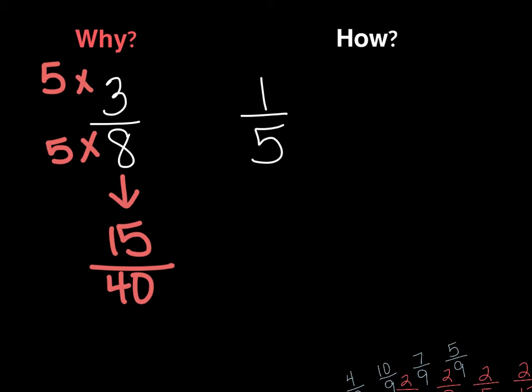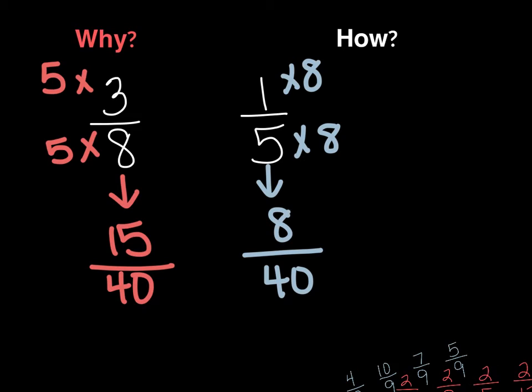Which is equivalent to 3 8ths. I just made an equivalent fraction, and then I'm going to take the fraction 1 5th, and I'm also going to change that denominator to 40. So what do I do to the 5 to make it become 40? I'm going to multiply it times 8, which means I have to take my numerator times 8. So now I have a new and improved fraction of 8 40ths.